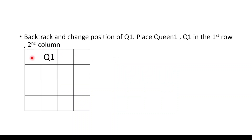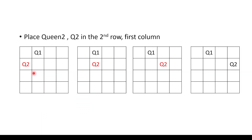We shift Q1 from column 1 to column 2. Now we search for valid positions for Q2 in the second row. Column 1: Q1 and Q2 are on the same diagonal — invalid. Column 2: Q1 and Q2 are in the same column — invalid. Column 3: Q1 and Q2 are on the same diagonal — invalid. Column 4: all constraints are satisfied — Q1 and Q2 are not in the same row, column, or diagonal. This is a valid position for Q2.